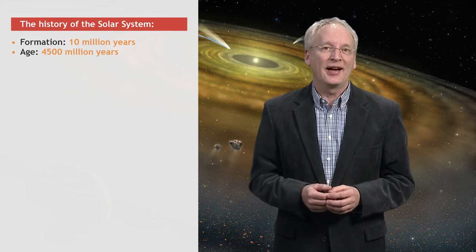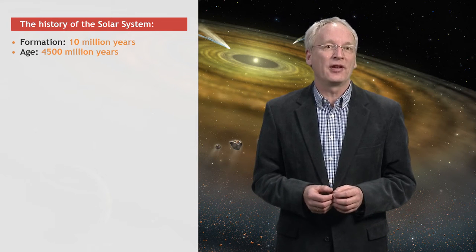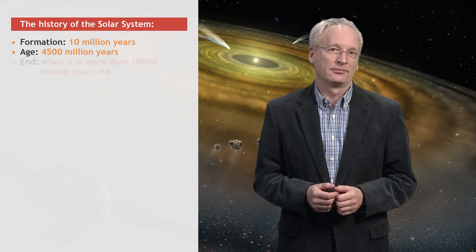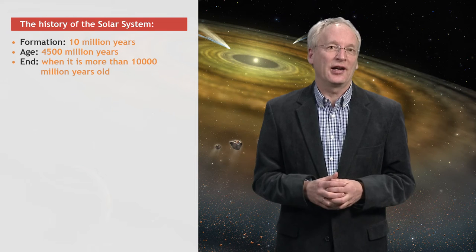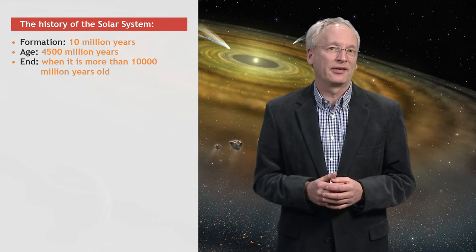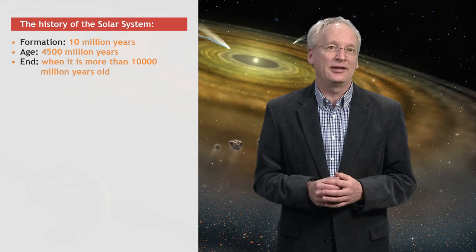When the sun dies, swallowing several of the inner planets, it will be more than 10 billion years old. As a comparison, we could say that the pregnancy of the solar system took only a month compared to a life of 80 years.